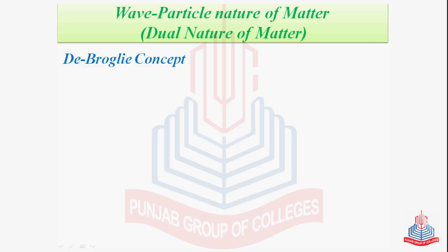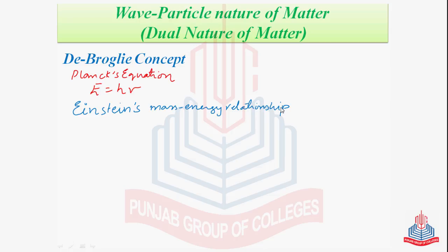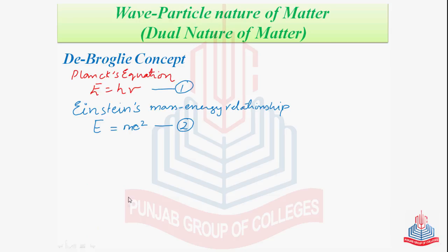De Broglie used two pre-existing phenomena. First, from Planck's equation: E = hν, where E is the energy, h is Planck's constant, and ν is the frequency. Second, Einstein's mass-energy relationship: E = mc², where m is the mass of the photon and c is the velocity of the photon. Equating these two equations, since the left-hand sides are equal, the right-hand sides will also be equal: mc² = hν.